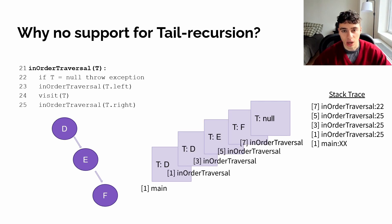Well, the question then is, why don't most compilers actually support tail recursion? And the reason for that is that if you do that, you would lose the stack trace.